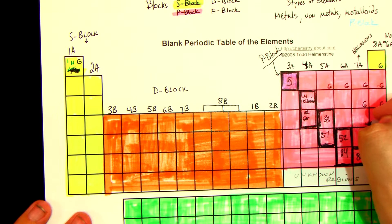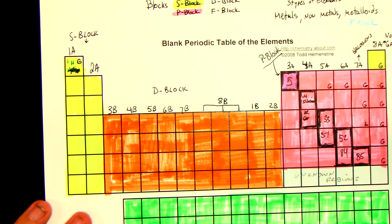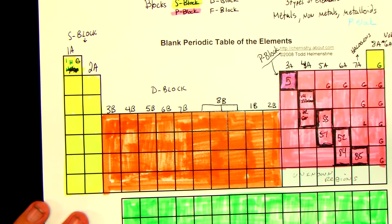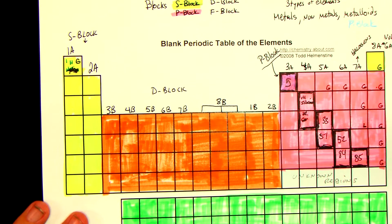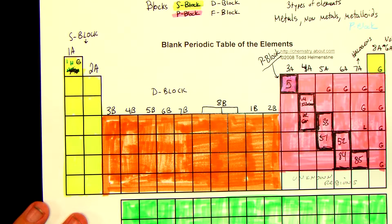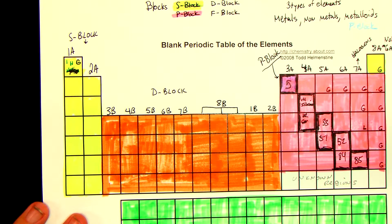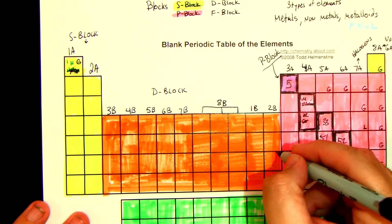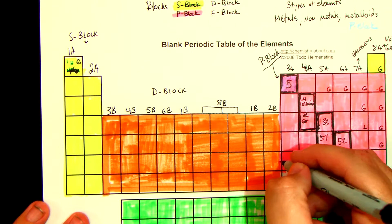Everything else is solid. Well, that's not quite true — what metal is liquid at room temperature? Mercury. Mercury is in group 2B, and it is the third one down, so we can put an L there. And that's mercury.